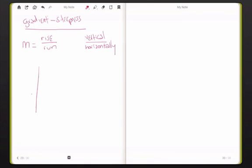Alright, so let's say we have a graph that looks like this. So obviously X goes like this, Y is there. Let's put a line like this.